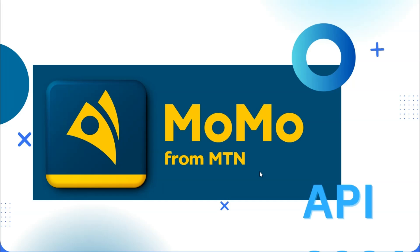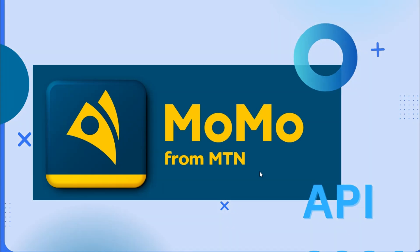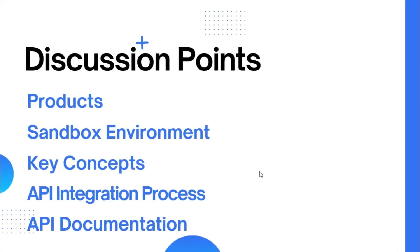We can accept payments, we can send some funds to multiple users, and we have some products available in the Momo API. The first thing we want to look at is our discussion points — we're going to talk about the products available inside the Momo list of services with the sandbox environment, and the key concepts we need to be familiar with when working with this API. We will also talk about the API integration process, then jump into the documentation.